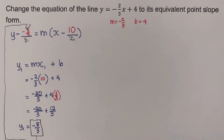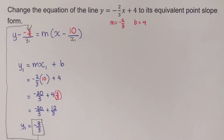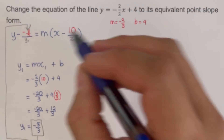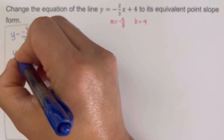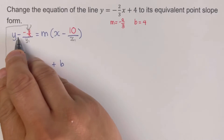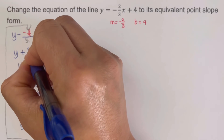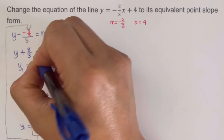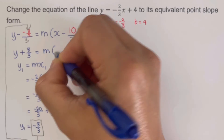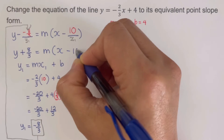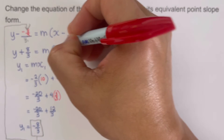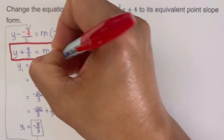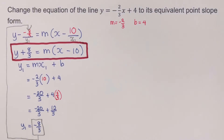So with x sub 1 equal to 10, the equivalent point-slope form equation is y plus 8 over 3 equals negative 2 over 3 times quantity x minus 10. Note that y minus negative 8 over 3 becomes y plus 8 over 3. This is the equivalent point-slope form of the given slope-intercept equation.